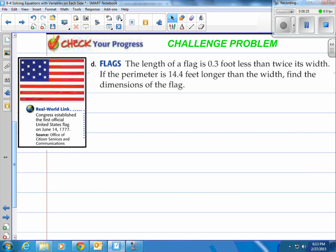All right, we're talking about flags here. And it says Congress established the first official United States flag on June 14, 1777. Pretty cool. Now, the length of a flag is .3 foot less than twice its width. If the perimeter is 14.4 feet longer than the width, find the dimensions of the flag.